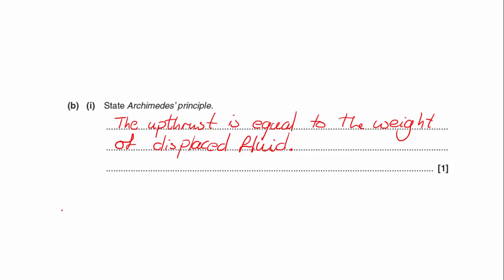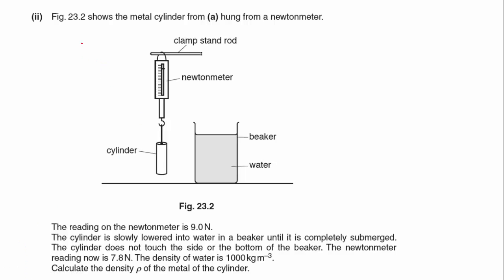I'm pretty sure the next part will make sure we understand what that actually means. Figure 23.2 shows the metal cylinder from part A hung from a Newton meter. The reading on the Newton meter is 9 Newtons, so I've got a weight of 9 Newtons. The cylinder is slowly lowered into water in a beaker until completely submerged. The cylinder doesn't touch the sides or bottom. The Newton meter now reads 7.8 Newtons. The density of water is 1000 kg/m³. Calculate the density of the metal of the cylinder.